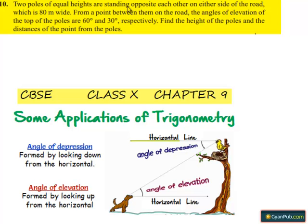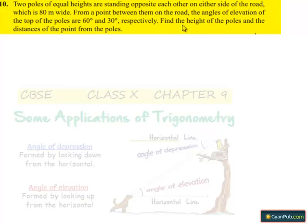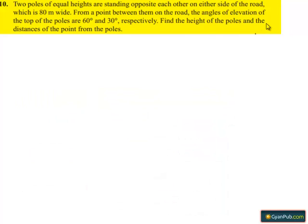Two poles of equal heights are standing on opposite sides of a road which is 80 meters wide. From a point in between them on the road, the angles of elevation of the top of the poles are 60 degrees and 30 degrees respectively. Find the heights of the poles and the distance of the point from the poles.